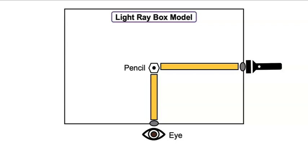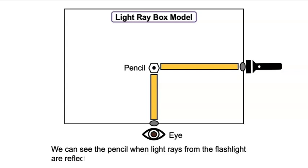This looks great. Now let's add an explanation. Let's say we can see the pencil when light rays from the flashlight are reflected off the pencil and enter the eye.